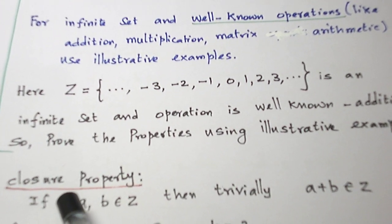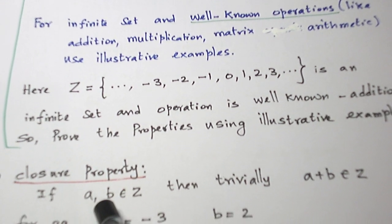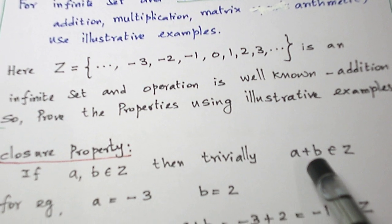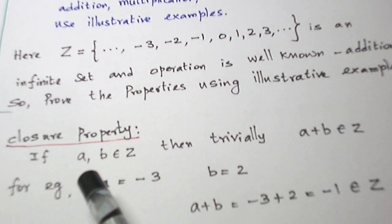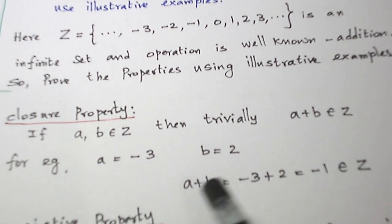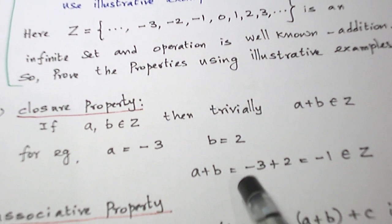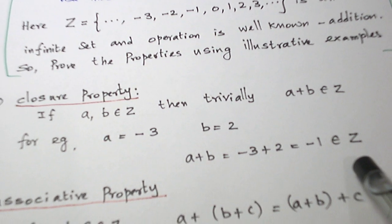First, let us take the closure property. Two integers, A, B. When we add two integers, it is very trivial that the summation is also an integer. So whenever we take A, B belongs to Z, A plus B is also in Z. Let us illustrate with an example. A equals minus 3, B equals 2. A plus B is minus 1, that is also an integer belonging to Z.